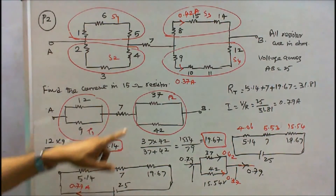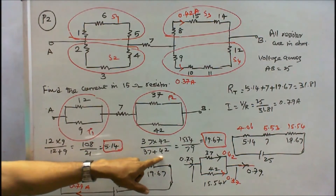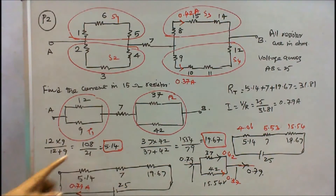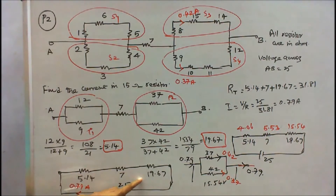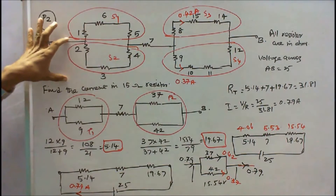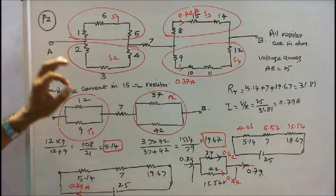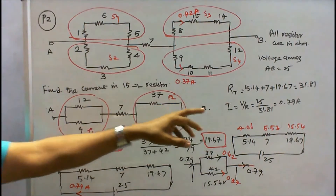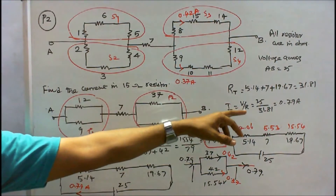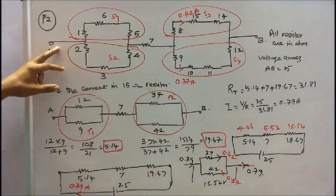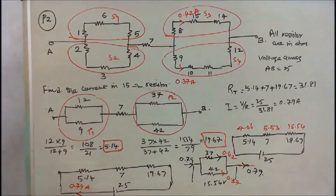37×42 / (37+42) = 19.67Ω. The total resistance in the circuit is 5.14 + 7 + 19.67 = 31.81Ω. Knowing the voltage, I = V/R = 25 / 31.81 = 0.79 amps. The current flow from A to B is 0.79 amps.